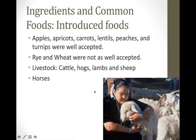Foods introduced by settlers included many fruits and vegetables, which were well accepted. Rye and wheat bread were not well accepted because Native Americans preferred corn as their starch or flour. With the introduction of livestock, they could become more agrarian and didn't have to be as mobile. Horses increased their hunting potential, and soon after came the introduction of guns.